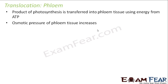Like how we saw in the case of ascent of sap — it occurred because of the processes of diffusion, osmosis, and transpiration — similarly, why does translocation occur? The product of photosynthesis is passed into the phloem tissue using the energy from ATP, that is the adenosine triphosphate molecules.